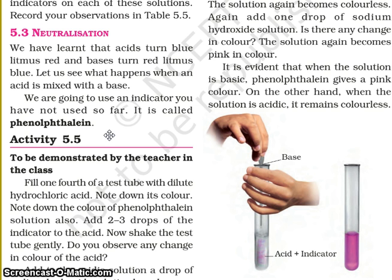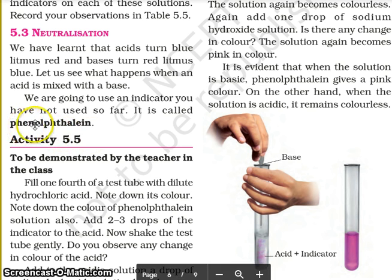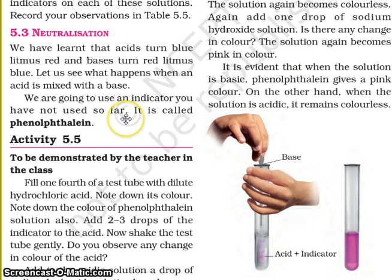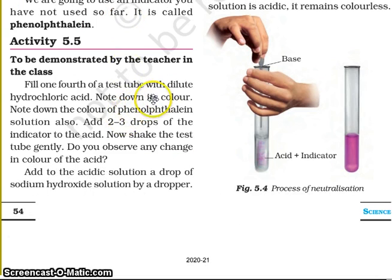We have learned that acid turns blue litmus red and base turns red litmus paper blue. Let us see what happens when an acid is mixed with a base. We are going to use an indicator you have not used so far. It is called phenolphthalein. Just remember it. This activity is to be demonstrated by the teacher in the class — you will not do it yourself; your teacher will demonstrate it.